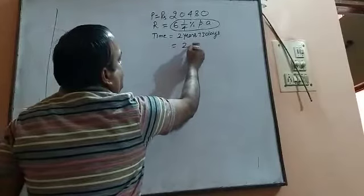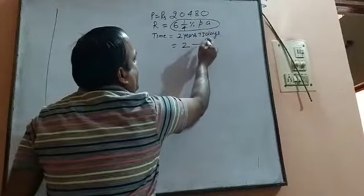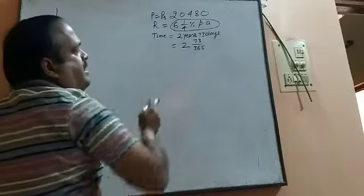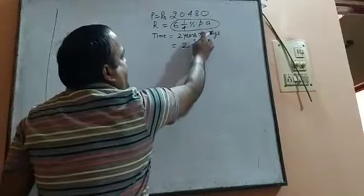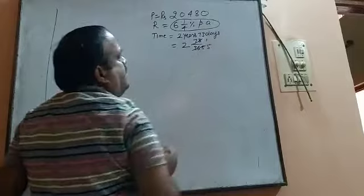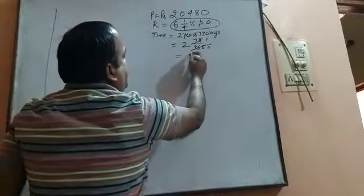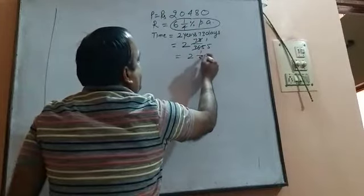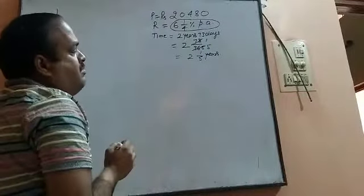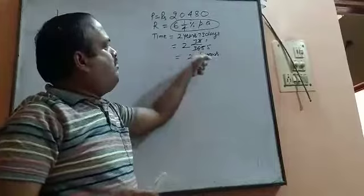To change 73 days into years, we need to divide 73 by 365. Since 73 is a factor of 365, it can cancel when we read the table up to 5. So we get a duration of 2 whole 1 by 5 years. Now we want to calculate the compound interest in 2 whole 1 by 5 years, so let us calculate year by year.